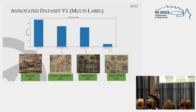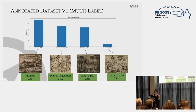At the moment, we have really just annotated pictures from the 16th century. The result is that we have 234 representations of animals, 177 of plants and vegetation, 167 landscapes, and 22 maps. So as you can see, it's a highly imbalanced data set, and we have already done some first experiments for a multi-label classification task with it.